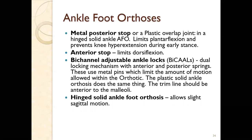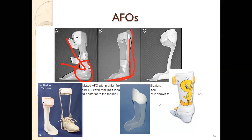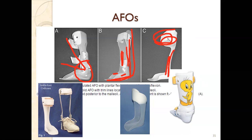Metal posterior stops in hinged or solid AFOs limit plantarflexion. An anterior stop limits dorsiflexion if the patient is weak in plantarflexion. Bi-channels lock both anterior and posterior springs. Hinged solid ankle-foot orthoses allow slight sagittal motion. Looking at different AFOs, a hinged AFO allows dorsiflexion to occur at the hinge as the person moves forward, while a static AFO allows no motion and provides solid support on both sides.